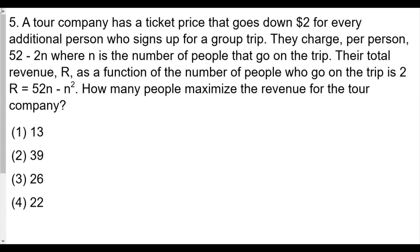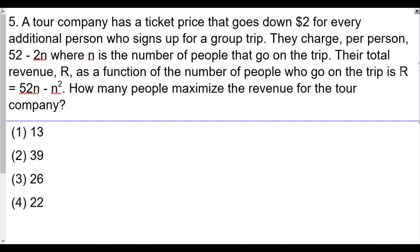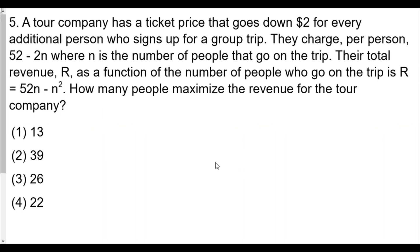A tour company has a ticket price that goes down $2 for every additional person who signs up for a group trip. They charge per person 52 - 2n, where n is the number of people that go on the trip. The total revenue R as a function of the number of people who go on the trip is R = 52n - n². How many people maximize the revenue for the tour trip?